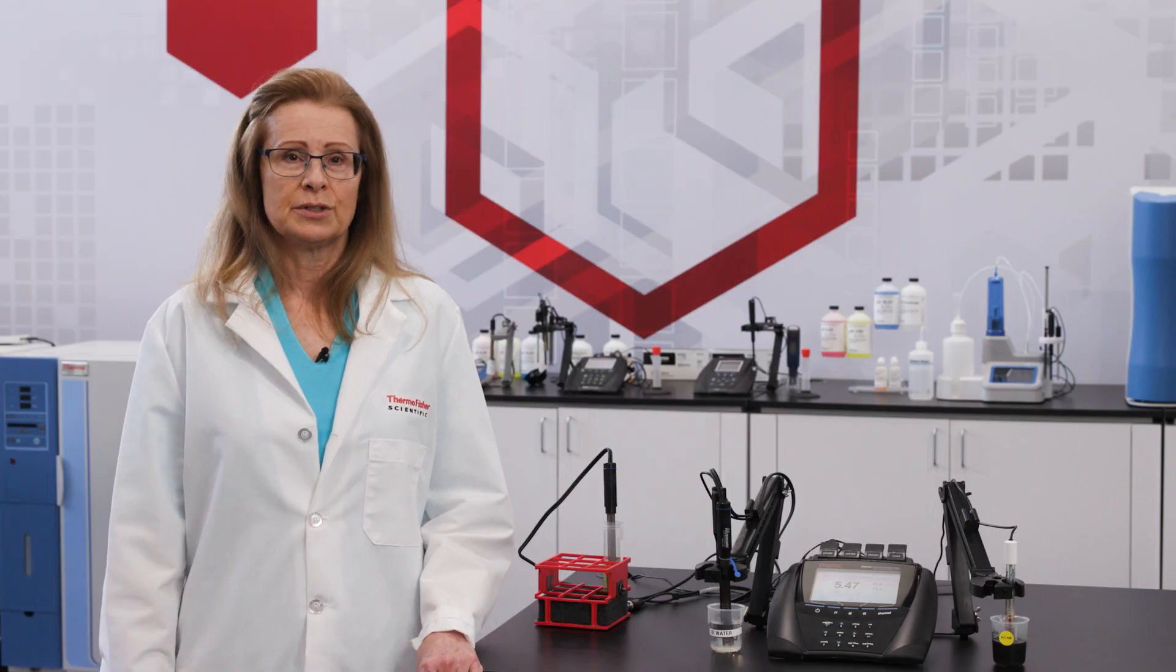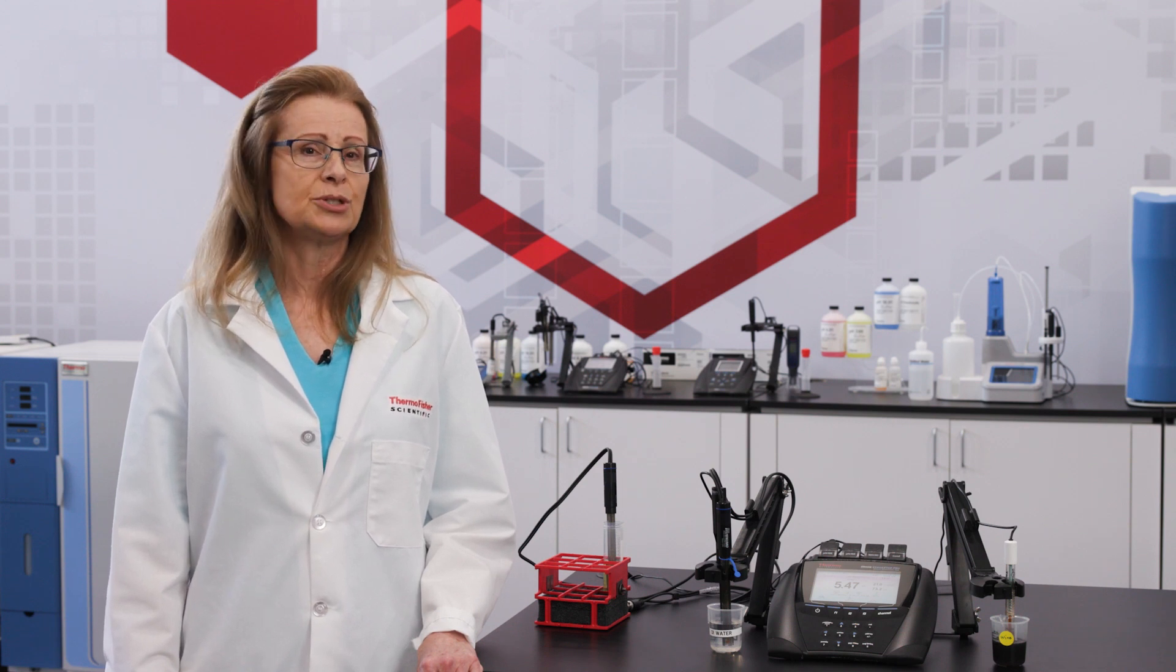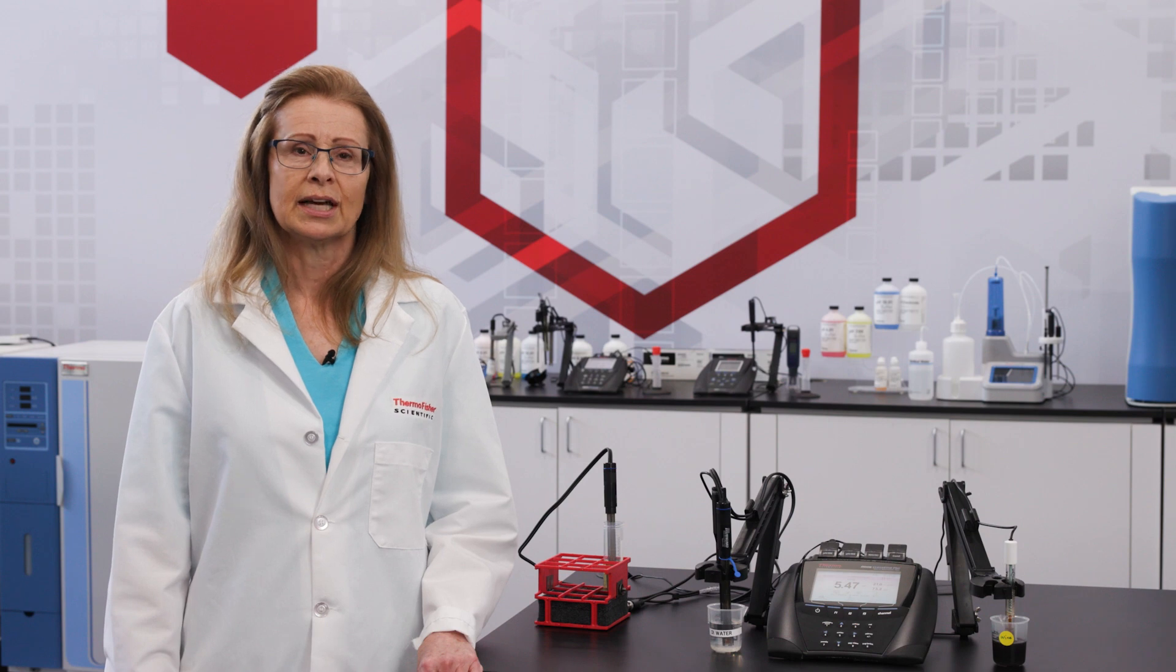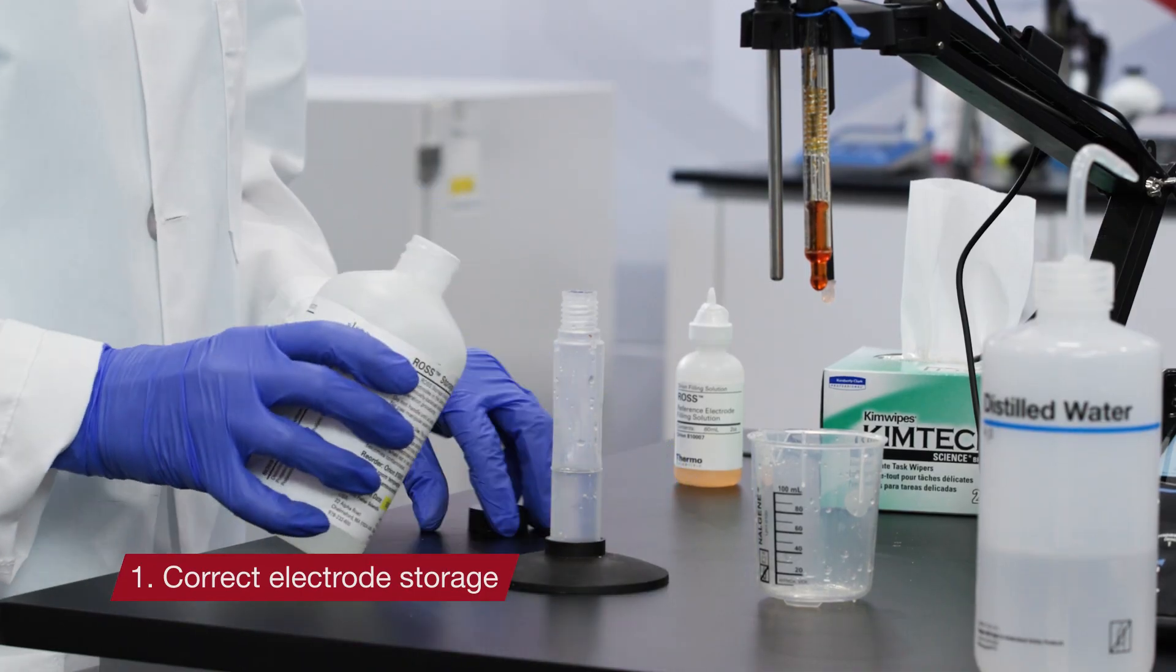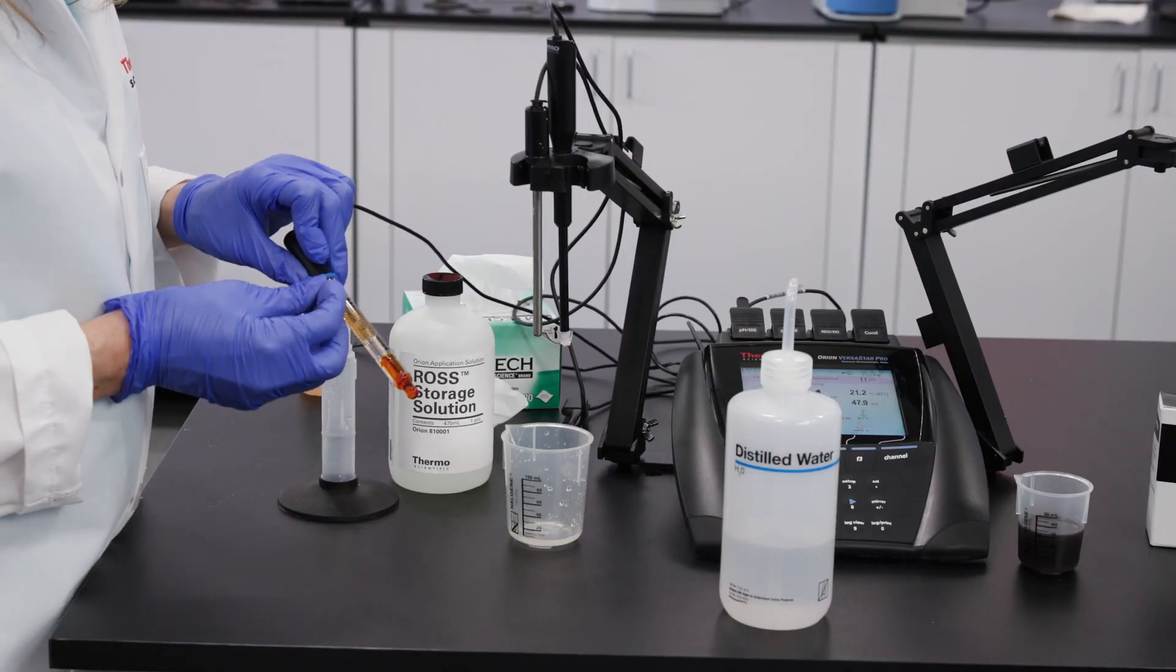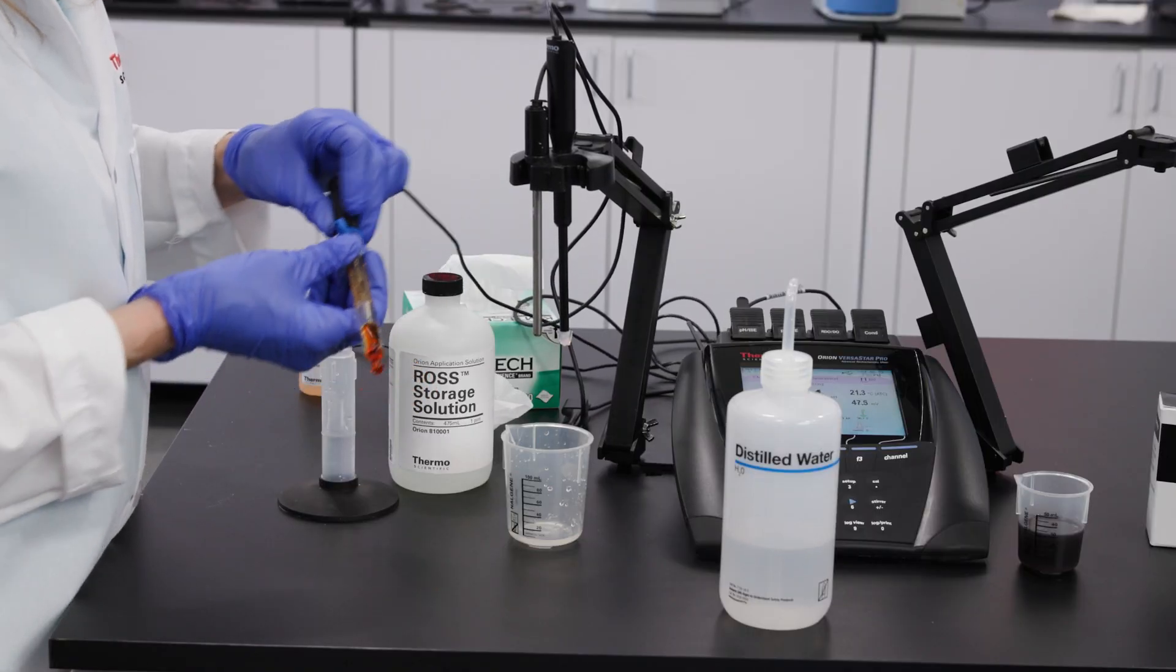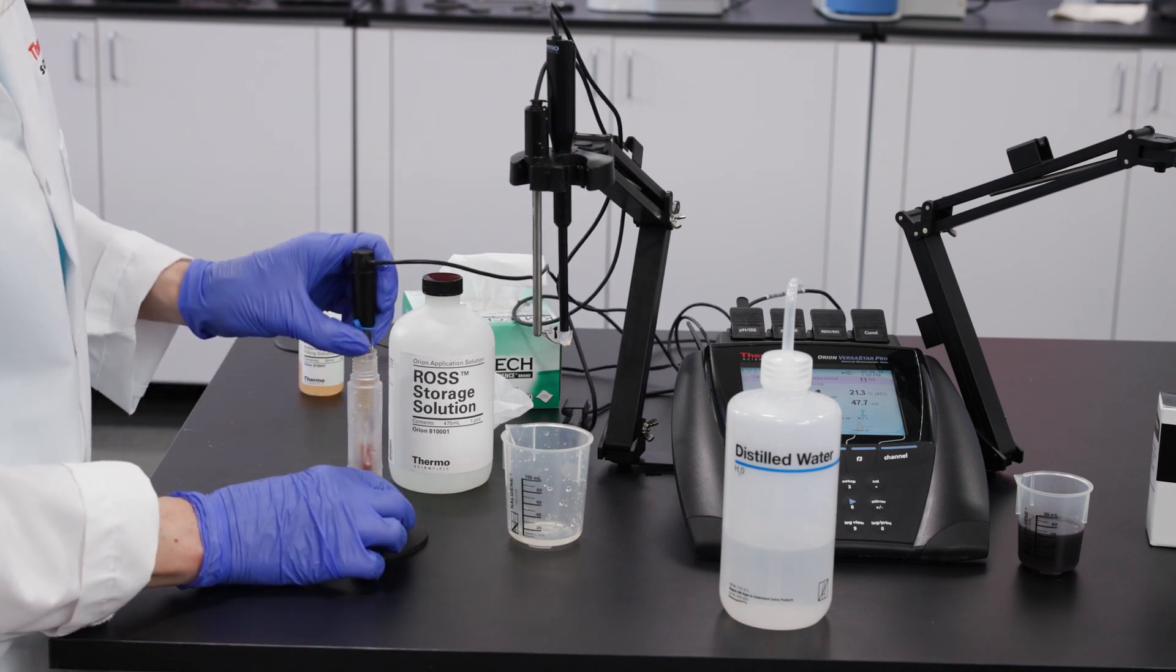Now that we've covered the 7 mistakes and how we can correct them, let's summarize what we can do to keep our pH measurement system performing like a well-tuned race car. Tune-up number one, correct electrode storage. Use a specialized pH electrode storage solution and close the fill hole before storage. This prevents depletion of the glass pH sensor, crystals clogging the junction, and shortened use life.